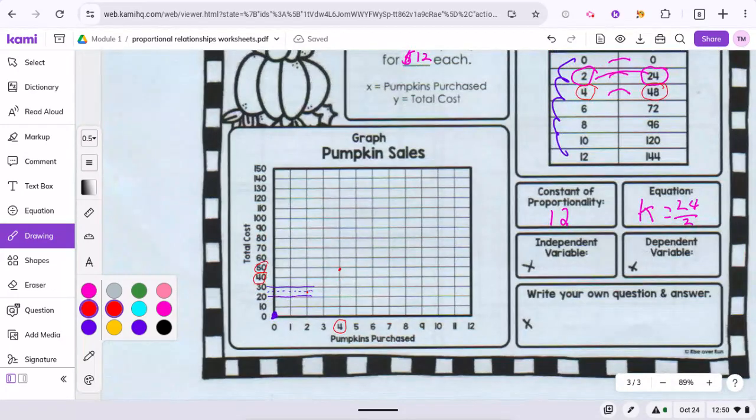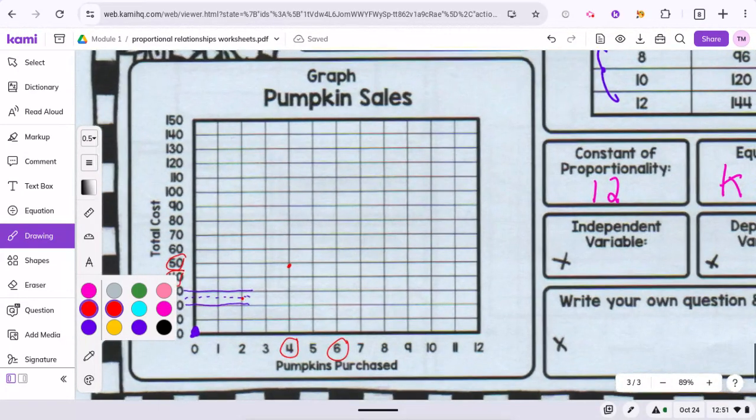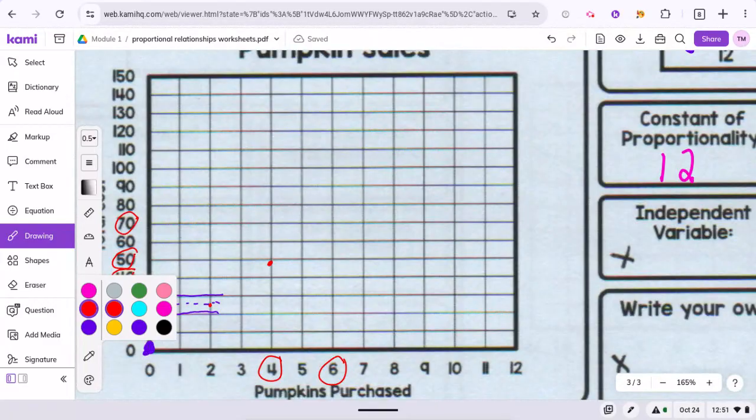Then you'd keep going 6 and 72. 6. Here's 70. So if I went across, it would be just above the 70 right about there.